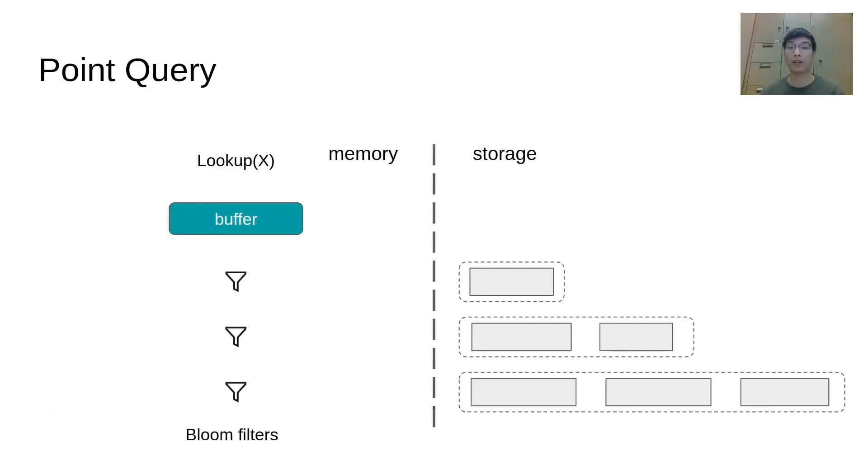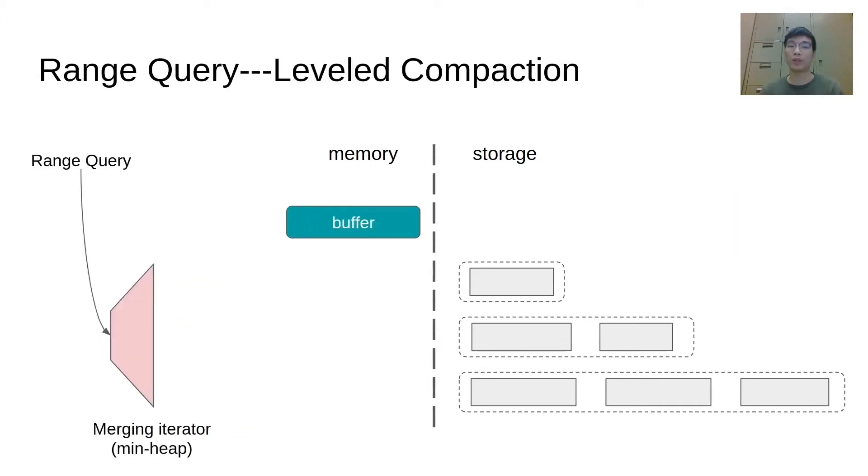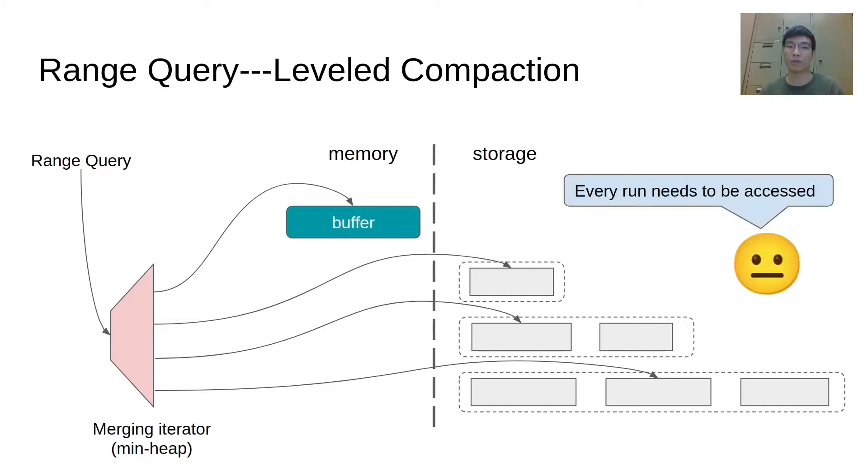Let's look at how LSM trees perform queries. For point queries, LSM trees often employ bloom filters to avoid accessing the runs that do not contain the search key. In practice, most of the queries could be answered with only one IO. Range queries in traditional LSM tree-based systems are implemented using a merging iterator, which is essentially a min-heap structure that merges all the runs to provide a sorted view. Because the runs in an LSM tree often overlap, a range query must access every run in the store.